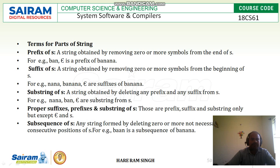Now, terms for parts of a string. Prefix of S: it is a string obtained by removing 0 or more symbols from the end of S. For example, suppose we have 'banana'. 'ban' is a prefix of 'banana'. If we remove 'a', 'n', 'a' from the end, what is left is 'b', 'a', 'n'. So 'ban' or epsilon is the prefix of 'banana'.